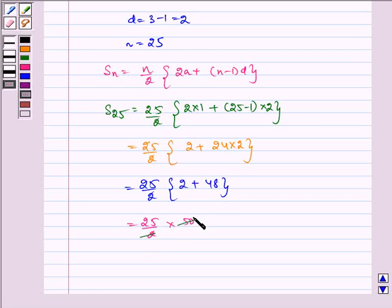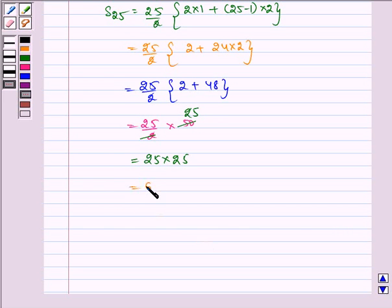Now, 50 gets cancelled by 2 and we get 25, which is equal to 25 into 25, which is equal to 625. Hence, the required sum is 625.